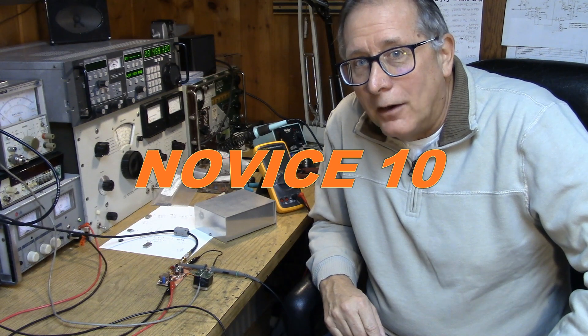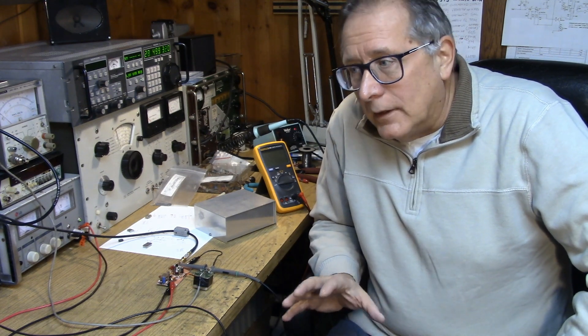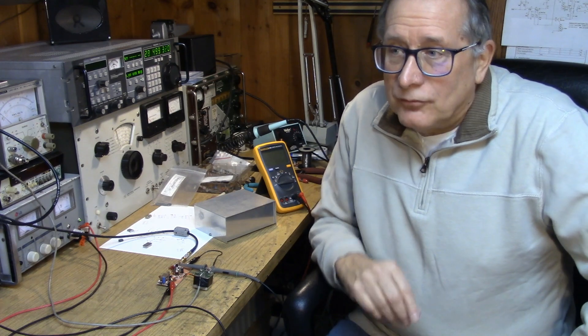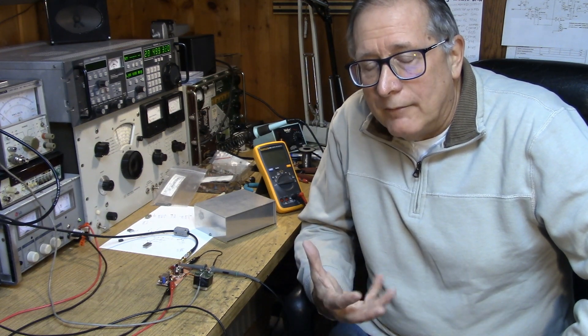Now double sideband has been the darling of the beginner phone type experimenter so building a double sideband type transmitter exciter or a transceiver as we're going to try to do is nothing new. Doing it in solid state is easier than ever using techniques really from the 70s and a lot of the foundational material for this project will be from the 70s.